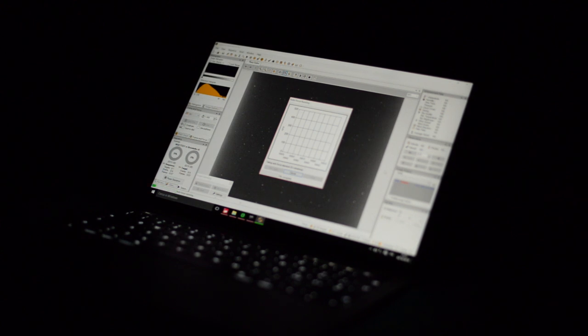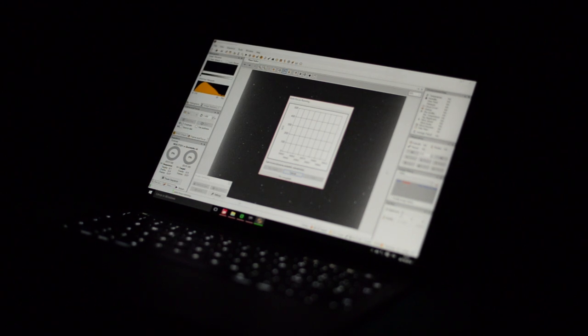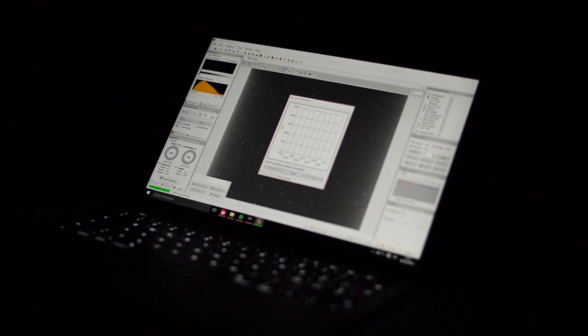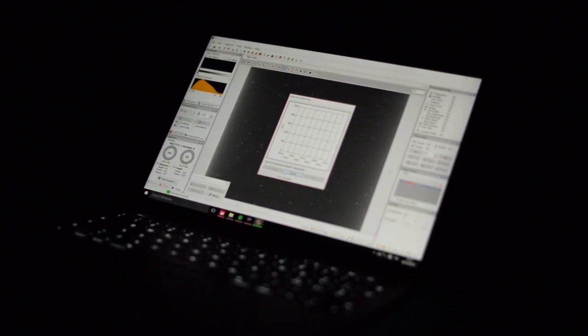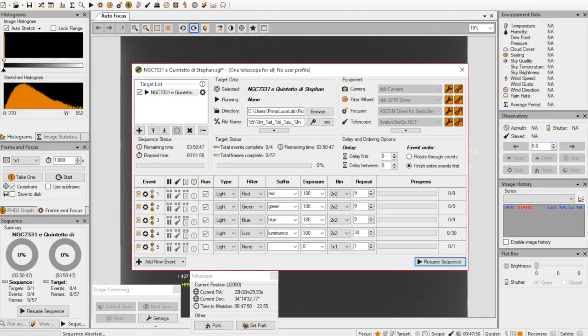After aligning and syncing the mount, now the Sequence Generator Pro takes control of the focuser and changes the position of the camera progressively and takes pictures. So calculating the dimension of the star and automatically it finds the best focus position.